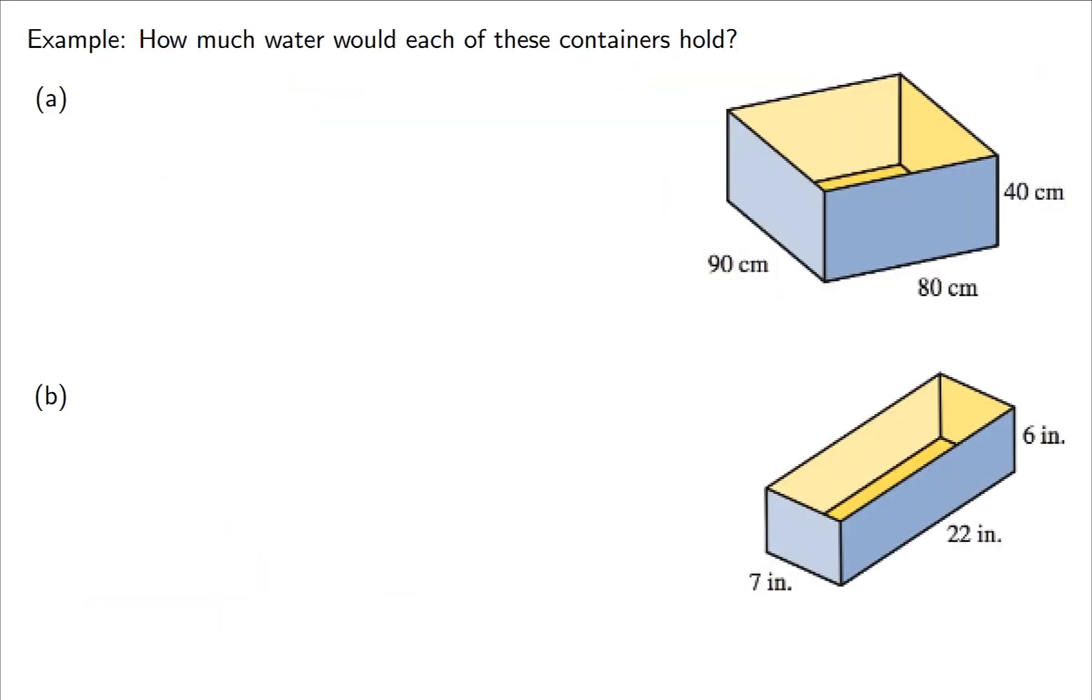How much water would each of these containers hold? And we're going to give an answer that matches up with the unit system that we're given. So our first example has 90 centimeters by 80 centimeters by 40 centimeters. With those being metric units, let's give our answer in liters. To do this, the first thing we need to do is find the volume, which is the length times the width times the height.